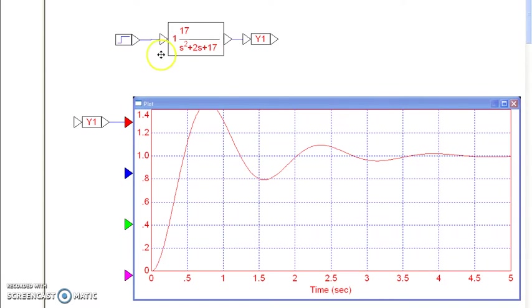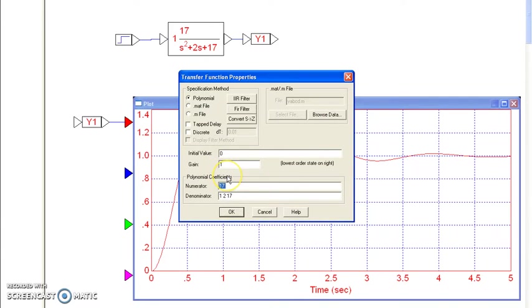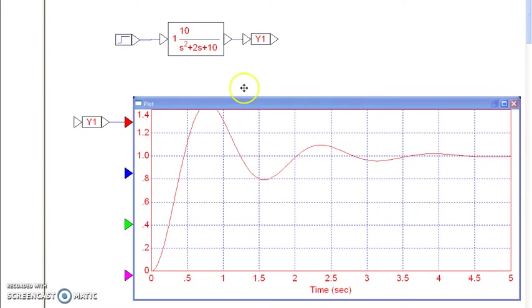If I make this minus 1 plus minus j3, now the complex part of the pole is j3. The period is 2.2 seconds. 2 pi over 2.2 is 3.